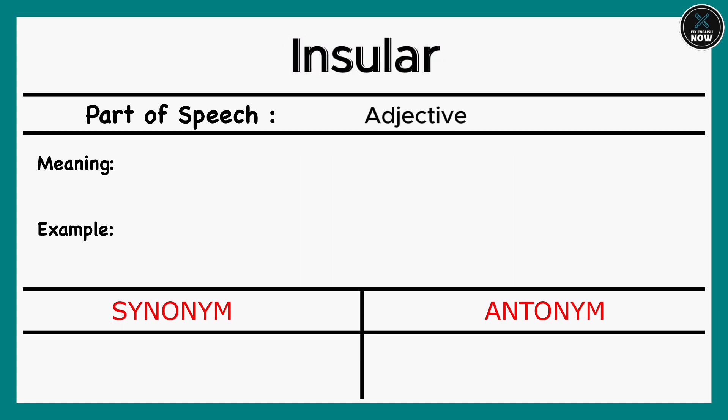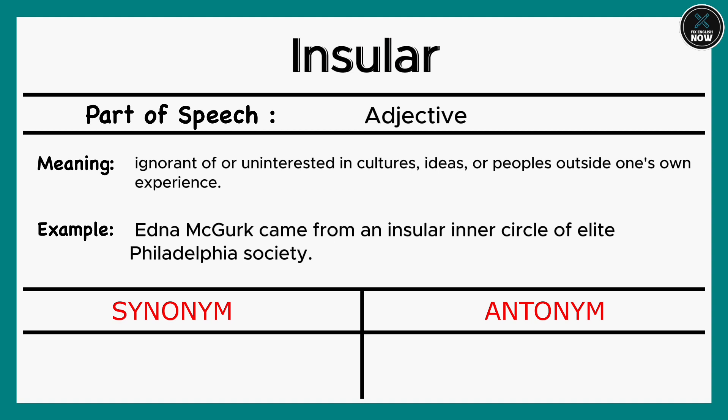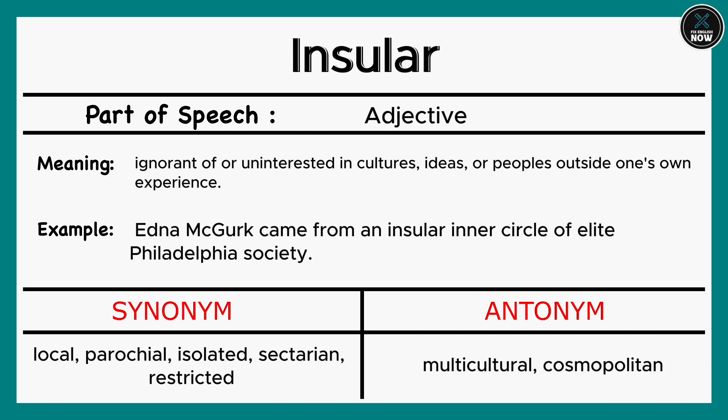Insular: Relating to an inner circle or isolated group. Example: Inner circle of elite Philadelphia society. Synonyms: Local, Parochial, Isolated, Sectarian, Restricted. Antonyms: Multicultural, Cosmopolitan.